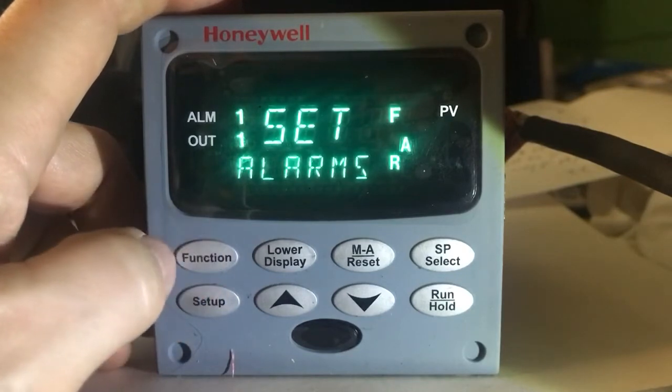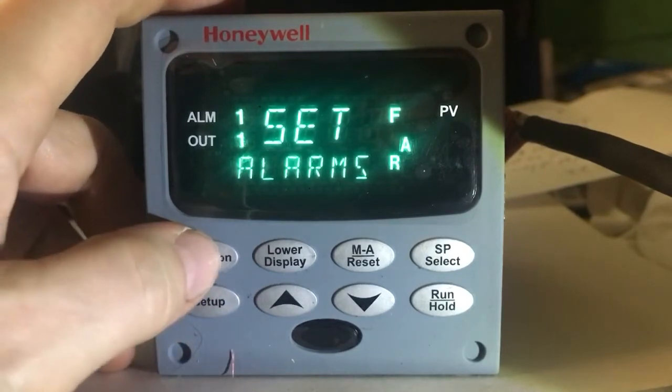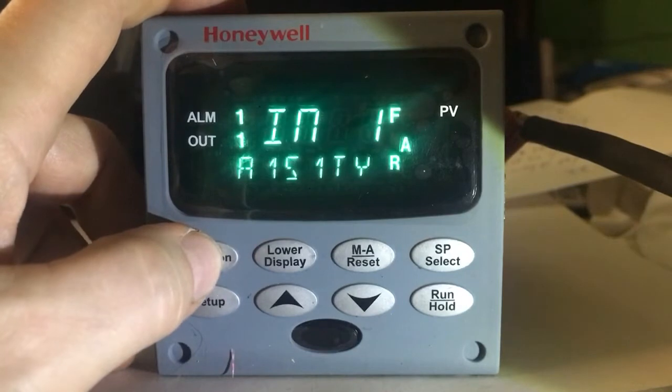Once you go to the alarm group, you press your function key which is above your setup key and that brings you into your function prompts.